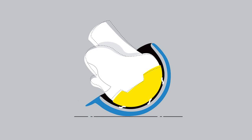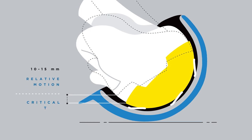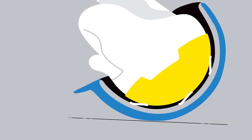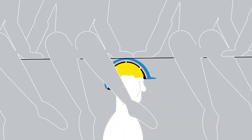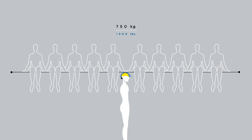The pattern and design of the MIPS brain protection system allows 10 to 15 millimeters of relative motion between your head and helmet during the critical 5 to 10 milliseconds of an impact, even when the combination of your body weight and velocity can create a contact force of more than 750 kilograms.